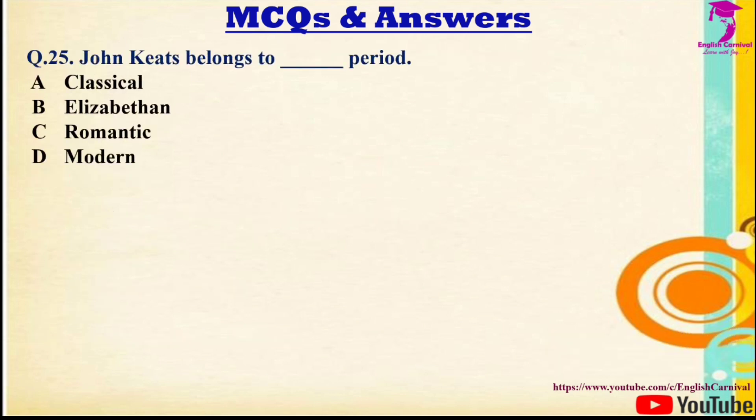Question 25: John Keats belongs to the — period. Options: A) Classical, B) Elizabethan, C) Romantic, D) Modern. The correct answer is C — the Romantic age.